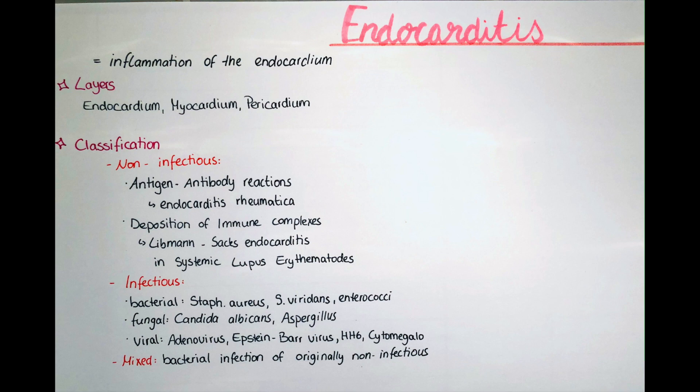The fungal infectious form of endocarditis is often fatal in approximately 50% of cases, and is often caused by Candida albicans. It occurs often in IV drug users, but also in patients with a prosthetic valve or in immunocompromised patients. These fungi form a biofilm around the valves and penetrate into the endothelial walls. Aspergillus is responsible for around 25% of fungal endocarditis.